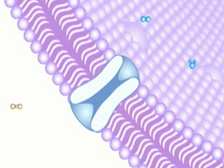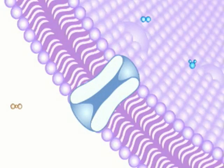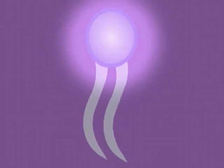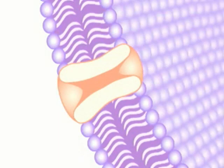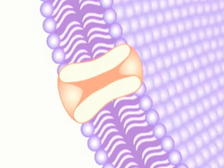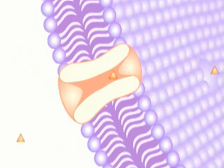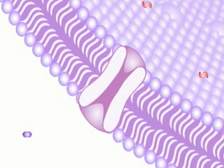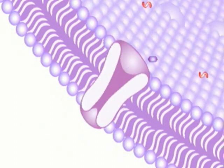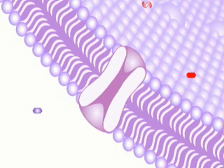The cell membrane consists of phospholipid molecules and proteins. A closer look at a phospholipid molecule reveals that it is composed of a hydrophilic or water-seeking head and a hydrophobic or water-repelling tail. The phospholipid molecules that make up the cell membrane are in constant motion. Proteins that help make up the cell membrane perform several important tasks, including transporting molecules into and out of the cell. Some proteins act as small pumps, actively transporting molecules from one side of the membrane to the other.